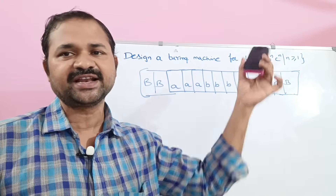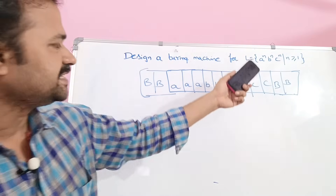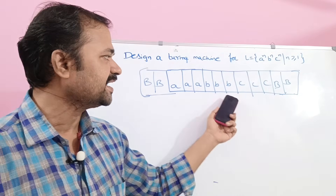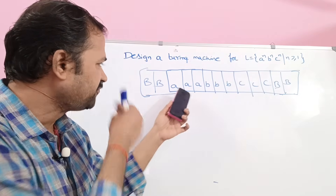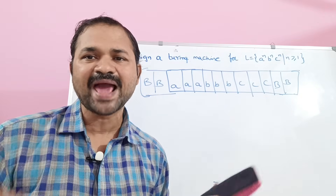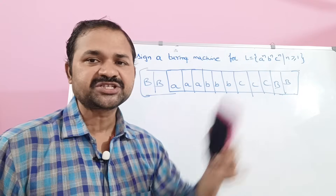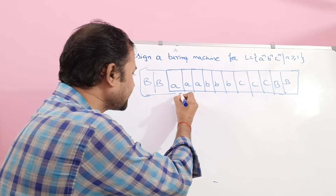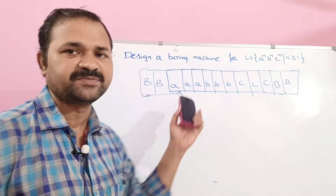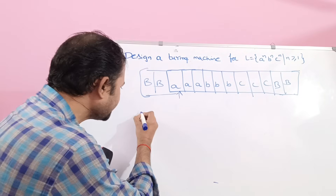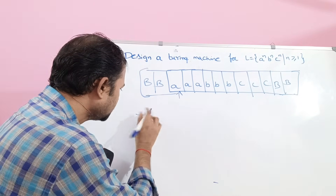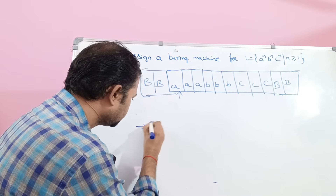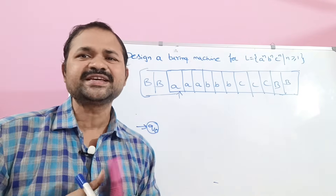Let us consider an example where N=3, so the string is AAABBBCCC. Before and after the string we can have any number of blank symbols. Initially the read/write head is at the first symbol A, and the starting state is Q0. The logic is very simple.